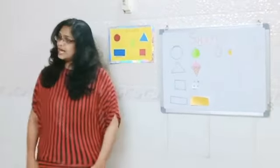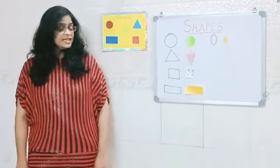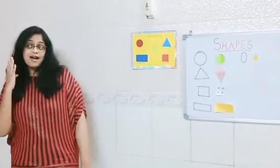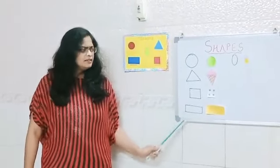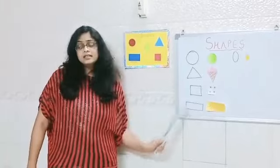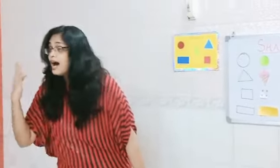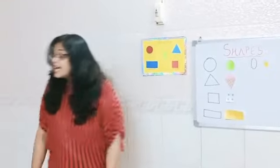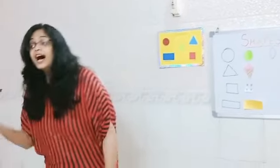So let's sing it out. I am a rectangle. I am a rectangle. I have four sides. We are a rectangle. We are a rectangle. We have four sides. But our opposite sides are equal.